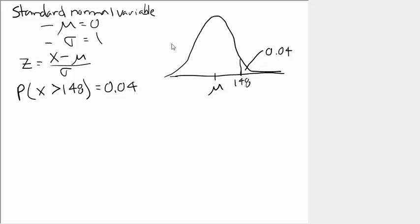Which means this big area is 0.96. And we know that because the total area under the standard normal curve is equal to 1.0.